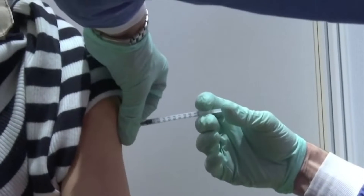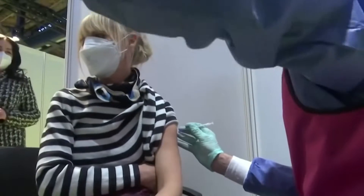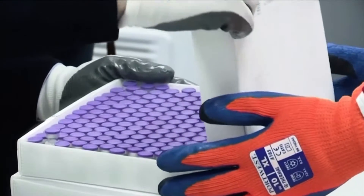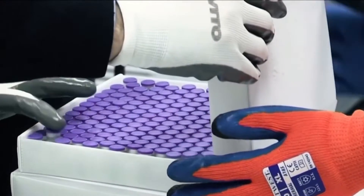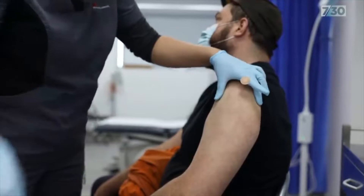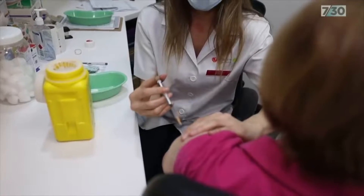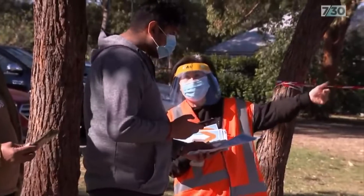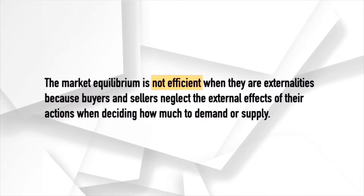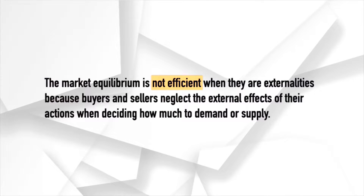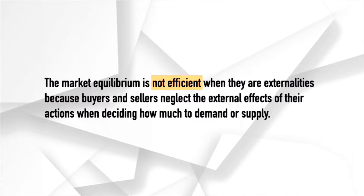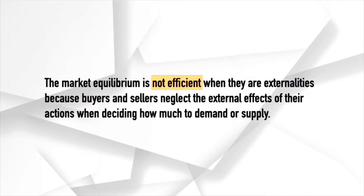Vaccines create positive externalities because when a person gets vaccinated, she engages in an activity that influences the well-being of a bystander but neither pays nor receives compensation for that effect. In other words, when you pay to get a vaccine, you indirectly benefit other people by lowering their chances of getting infected with a disease. The market equilibrium is not efficient when there are externalities because buyers and sellers neglect the external effects of their actions when deciding how much to demand or supply.